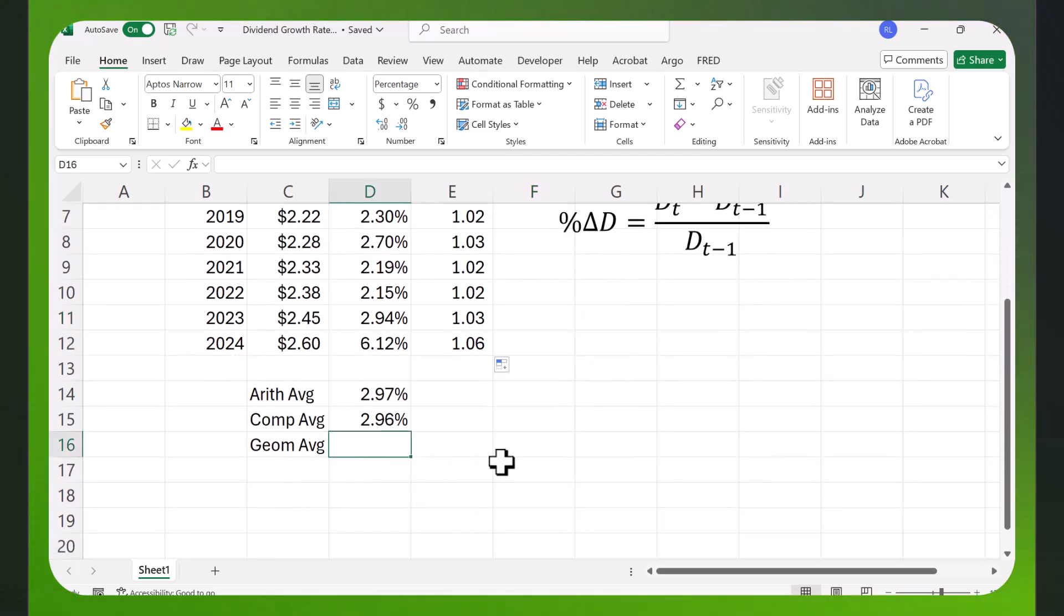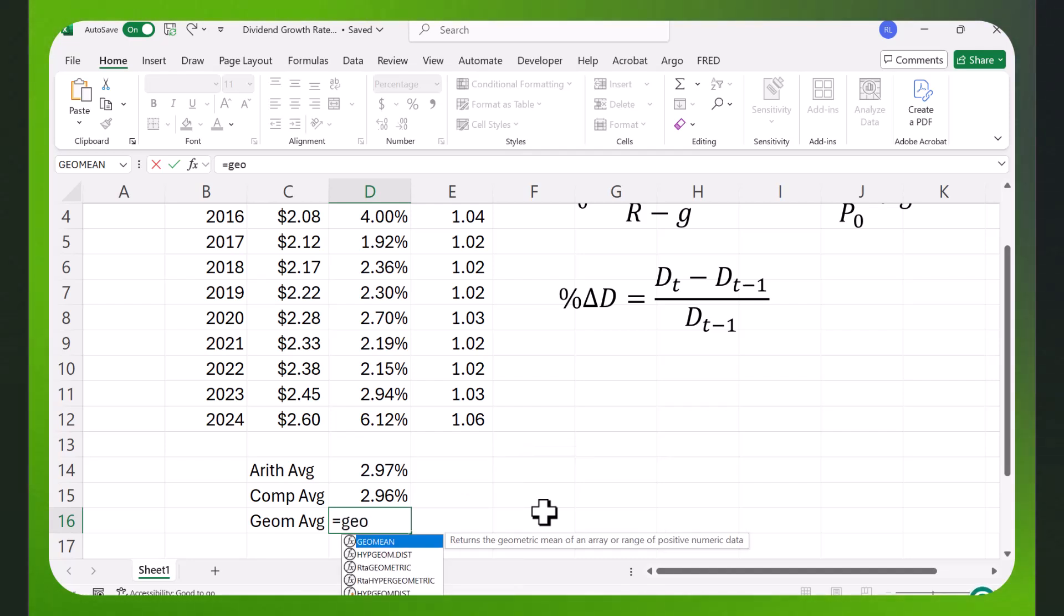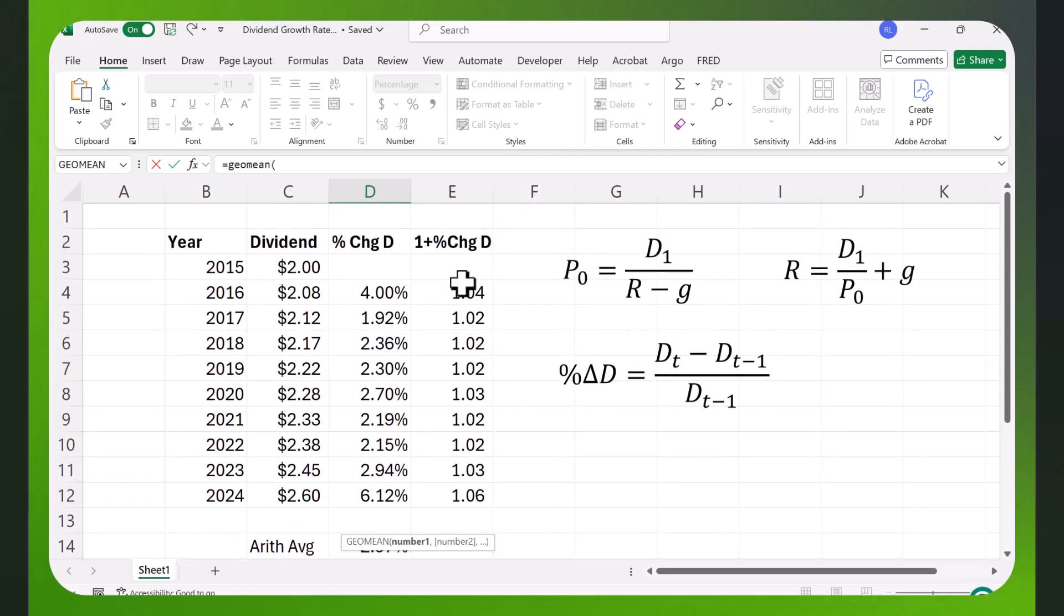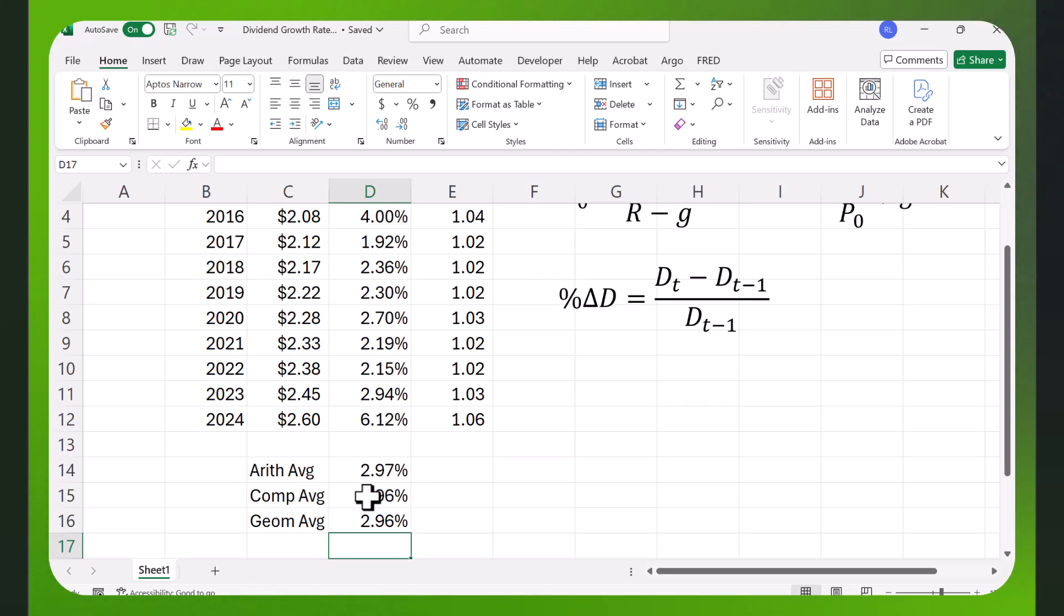There's actually a function here that will do that for you. We're going to take the geometric average, it's called GeoMean. We're going to take this, and we're going to multiply it all out. Then we're going to have to subtract 1 from it because we added 1 to those numbers. Here we get exactly the same answer, 2.96%.